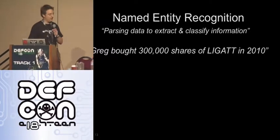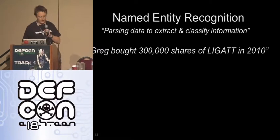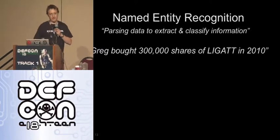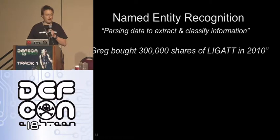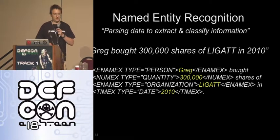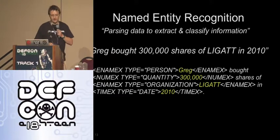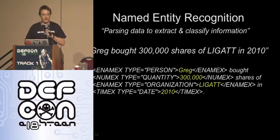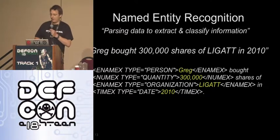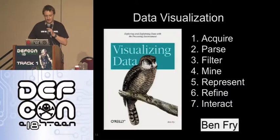I completely randomly chose this phrase: 'Greg bought 300,000 shares of Legalat in 2010.' If you don't know about Legalat, Google it — it's very interesting, search Legalat and attrition. If you run that phrase through named entity recognition, you'd come out with extracted entities. I'm mentioning NER because it's a feature in Maltego. There are other products like Open Calais as well — go check them out.